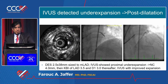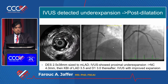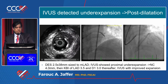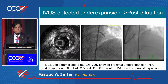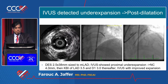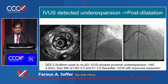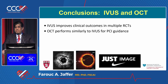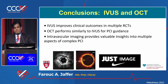Imaging then confirmed underexpansion in a large positively remodeled plaque in the mid-LAD — even though we had sized well to the distal lumen, there was tremendous residual plaque burden. This informed post-dilatation strategy, upsizing from a 2.5 stent to 3.5 and 4.0, with a final kiss to resolve the diagonal. In conclusion, IVUS and OCT are both incredibly useful: IVUS improves outcomes in multiple randomized trials, OCT performs similarly for PCI guidance, and intravascular imaging provides valuable insights across multiple aspects of complex PCI.